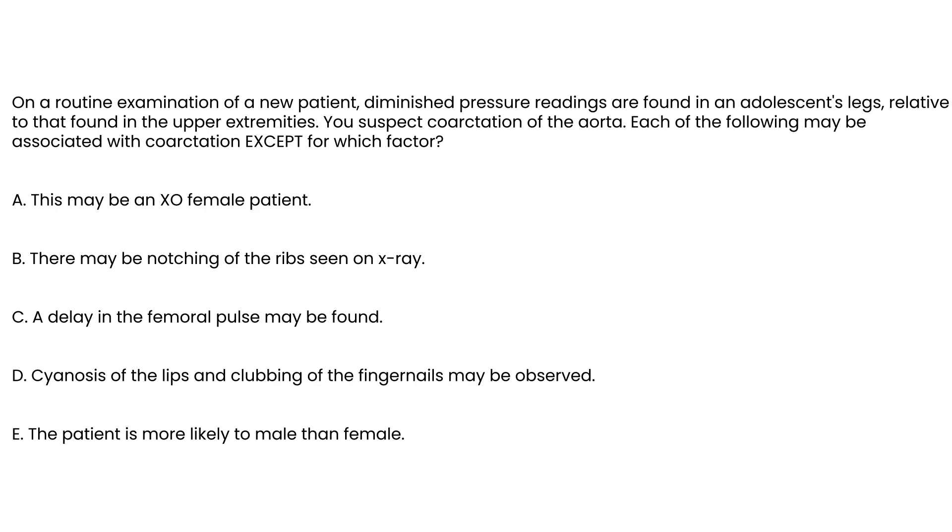Let's take a look at a few vignettes. On a routine exam of a new patient, diminished blood pressure readings are found in an adolescent's legs relative to that found in upper extremities. You suspect coarctation of the aorta. Each of the following may be associated with coarctation except. Let's go through these.